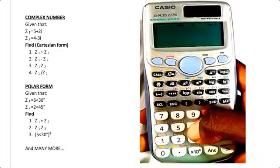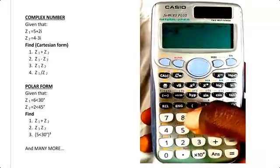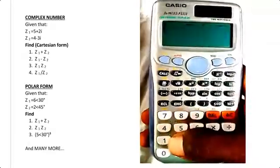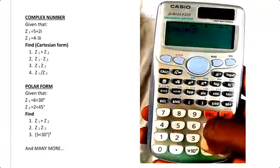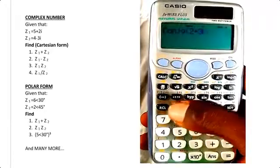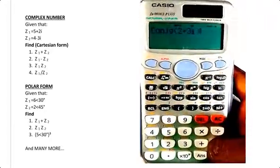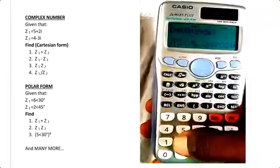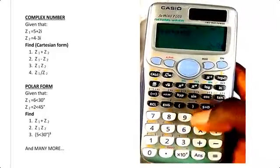Let's see how to find the conjugate also. Now I want to find the conjugate: Shift, 2, and 2 again, of 2 + 3i close brackets. It's displayed in polar form. You change to Cartesian form: Shift, 2, and 4, equals. Perfect.